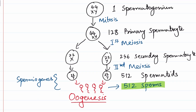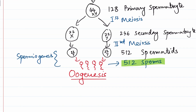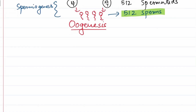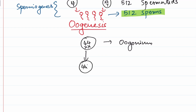Now coming to oogenesis. While spermatogenesis starts at puberty, oogenesis happens way before. In the fetal life, there are a large number of oogonia — primary oogonia — having a chromosome karyotype of 44XX. These primary oogonia will develop into the primary oocyte during the fetal period.